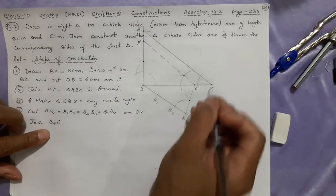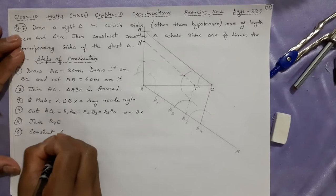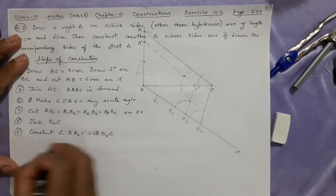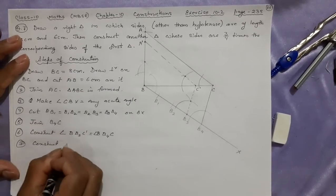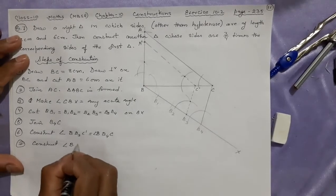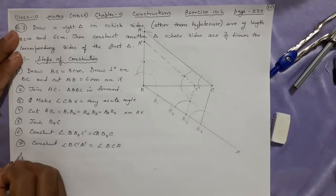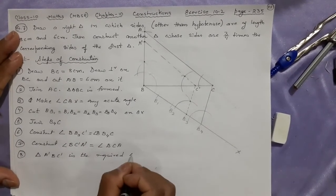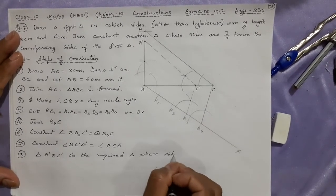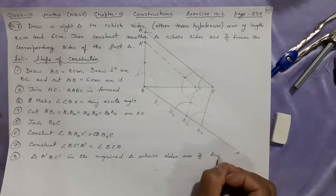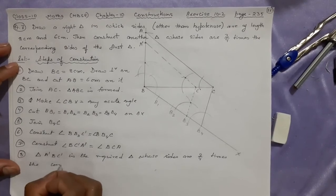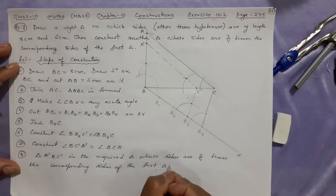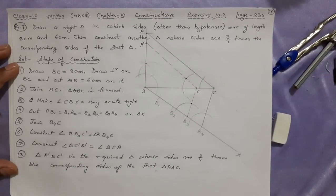Remember, wherever there is three by four, you join the last one. Step 6: Construct angle BB3C dash equal to angle BB4C. Similarly, construct angle BC dash A dash equal to angle BCA. Triangle A dash B C dash is the required triangle whose sides are three by four times the corresponding sides of the original triangle ABC.